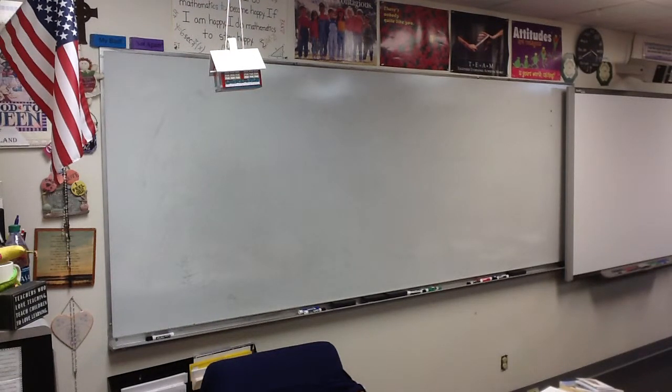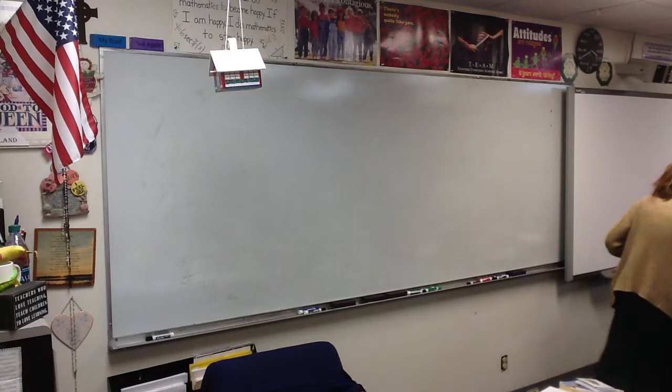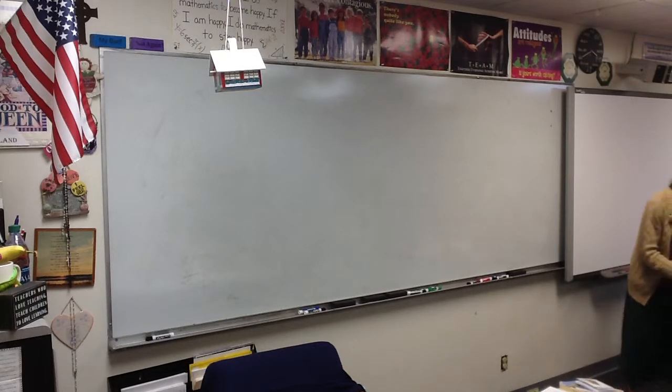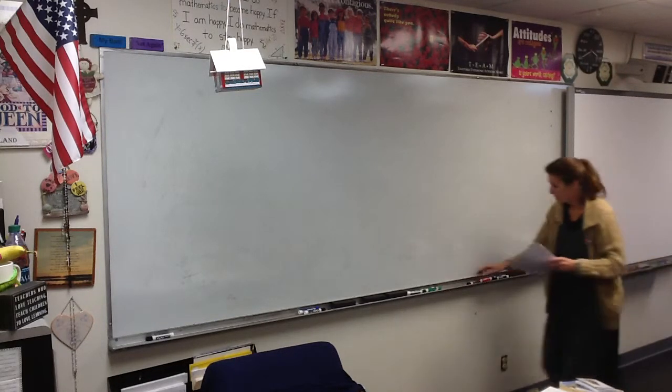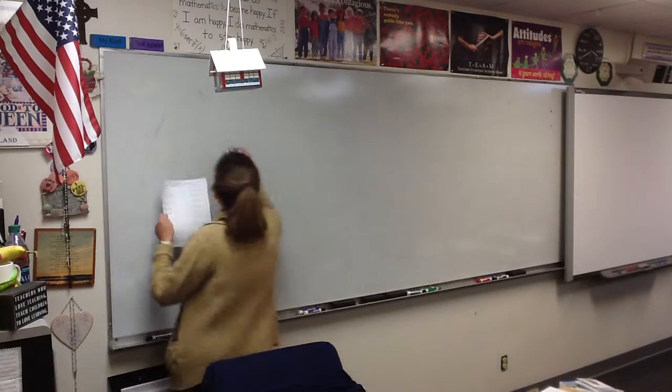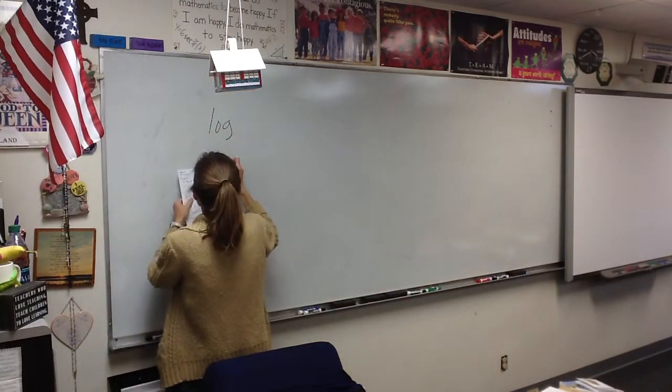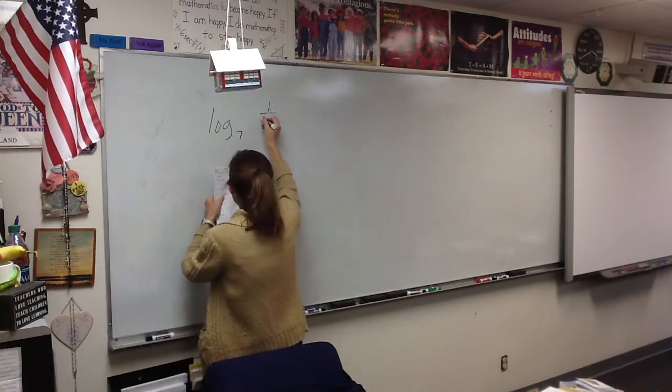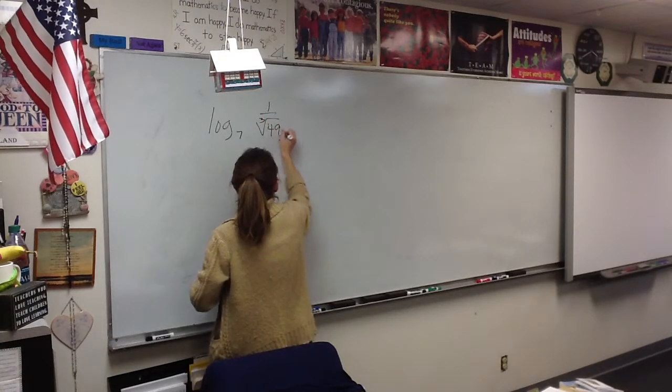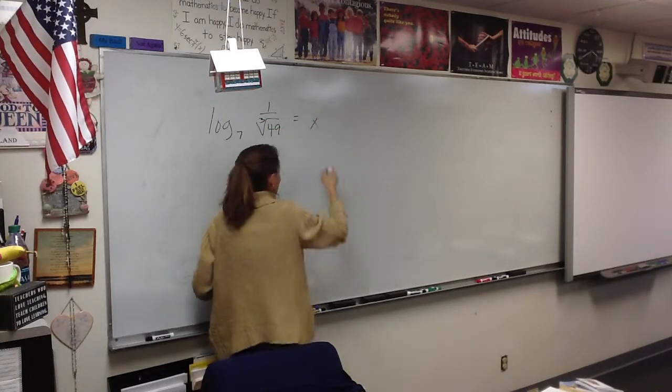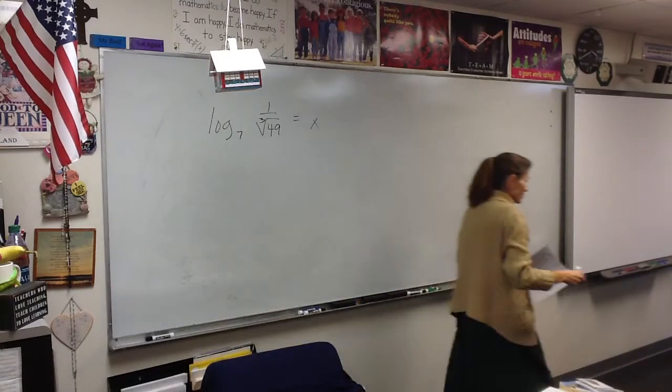So let's take a look at D. We have a question about D, so let's take a look at that one. We have the log base 7 of 1 over the cube root of 49, and we want to know what that equals. Well, we have a couple different strategies, don't we?